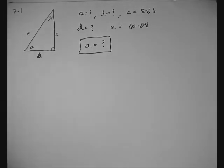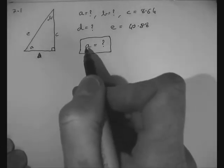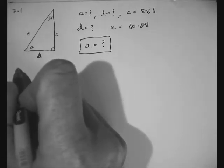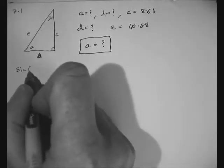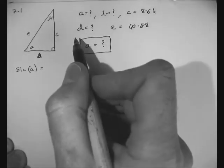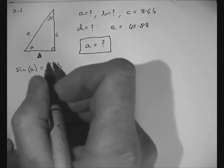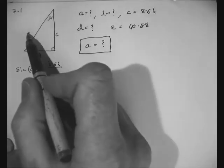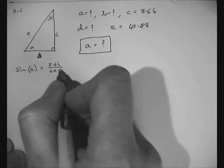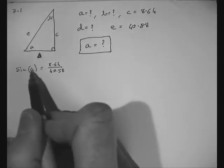In this video we are going to use our trig tools to find the measure of angle A. If we start with sine, the sine of angle A, which we don't know yet, is equal to the opposite which is C, 8.64, over the hypotenuse E, 40.88. This looks promising as it's an equation in one variable, A.